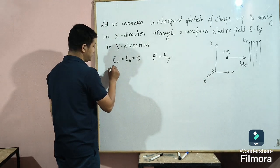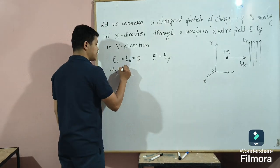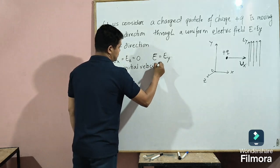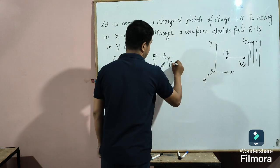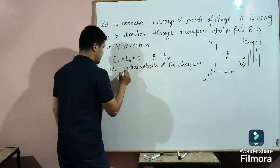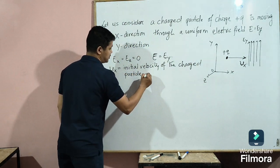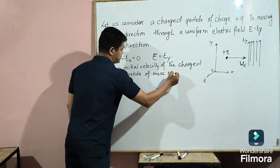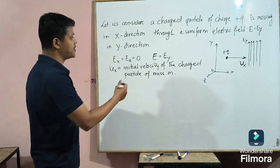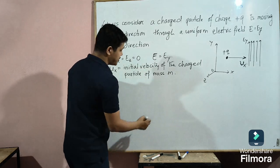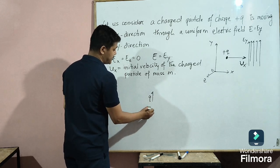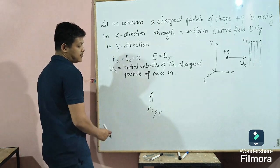Let Ux be the initial velocity of the charged particle of mass M. Now, the force experienced by this charged particle — the force experienced by a charged particle Q in an electric field is given by F equals Q into E. That is the formula.